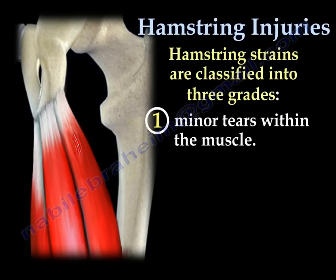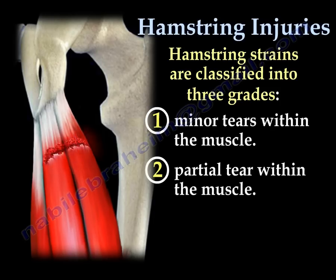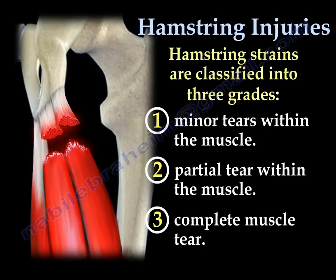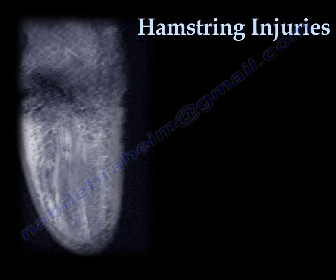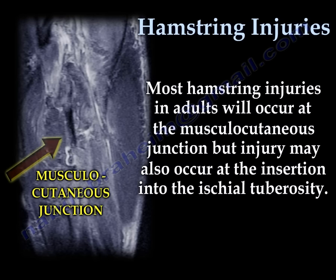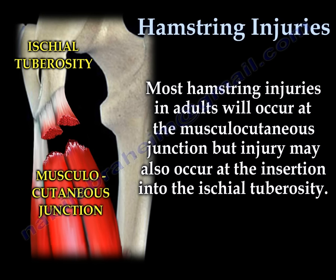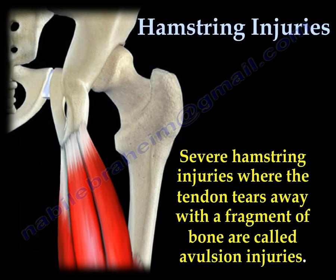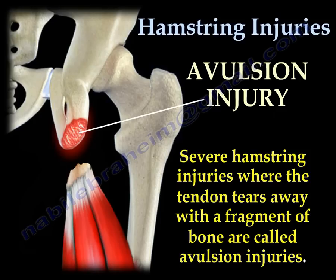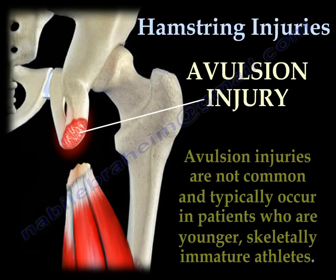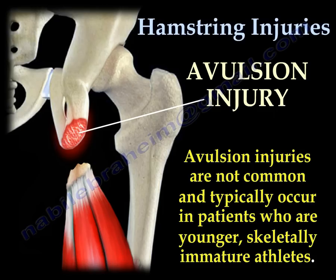Grade one is a minor tear within the muscle. Grade two is a partial tear within the muscle. Grade three is a complete tear of the muscle. Most injuries occur at the musculotendinous junction, but injury may also occur at the insertion into the ischial tuberosity. Severe hamstring injuries where the tendon tears away with a fragment of bone are called avulsion fracture injuries, typically seen in younger, skeletally immature athletes.